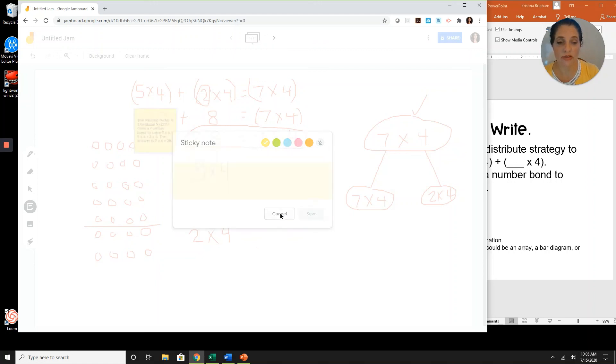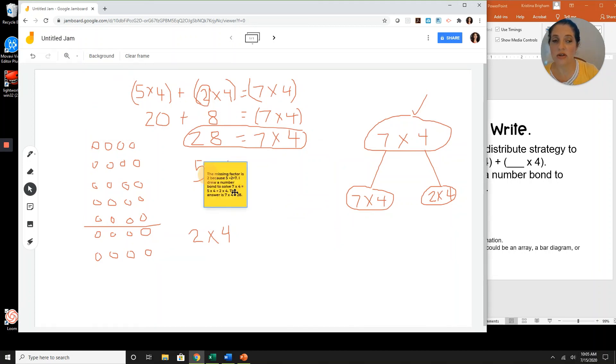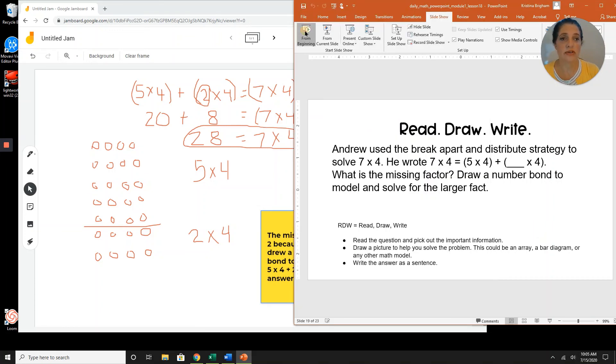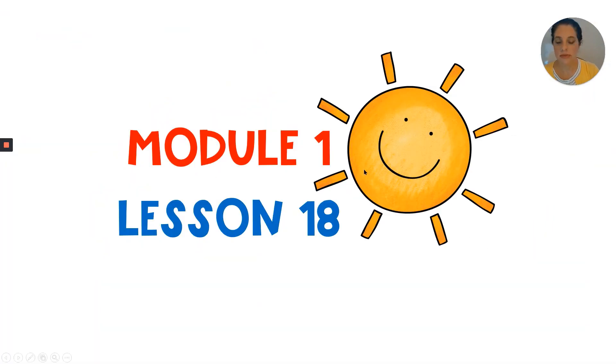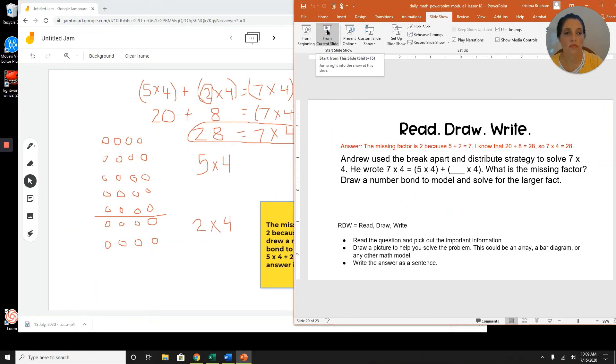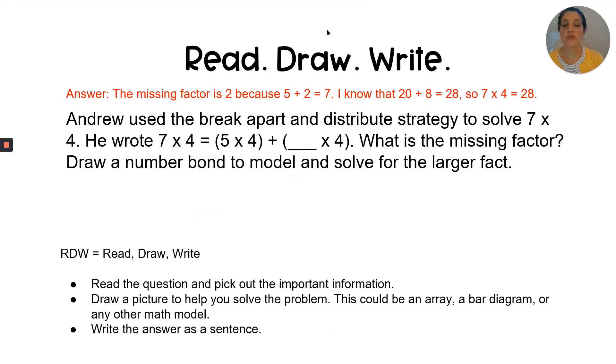So now I'll go back to the answer key to check how close I am to the answer that is given. And it doesn't have to be exactly the same. It just has to be my best work. So let's see how close we are. Okay, so this is the answer from the answer key. The missing factor is 2 because 5 plus 2 equals 7. I know that 20 plus 8 equals 28. So 7 times 4 equals 28.